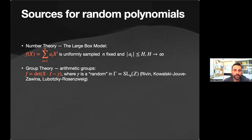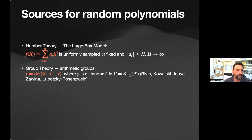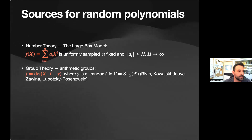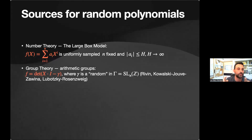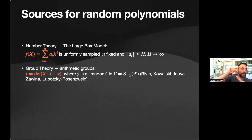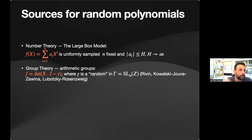Another way — more group-theoretic — is to choose a nice arithmetic group, for example SL(n,ℤ), which is finitely generated. People like Rivin, Kowalski, Zywina, and Lubotzky chose a set of generators of SL(n,ℤ), put some technical conditions like symmetry, and then do a random walk on the Cayley graph of the group. After n steps you arrive at some random element and take its characteristic polynomial. This gives another source of random polynomials.